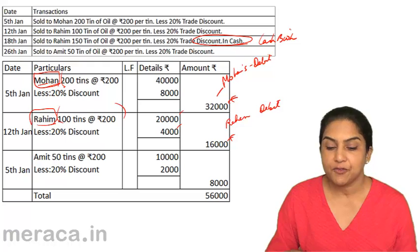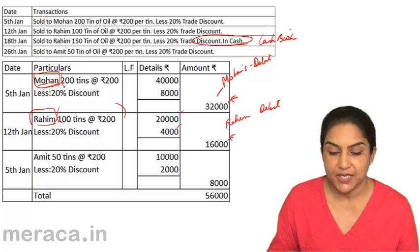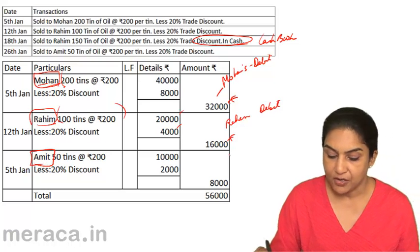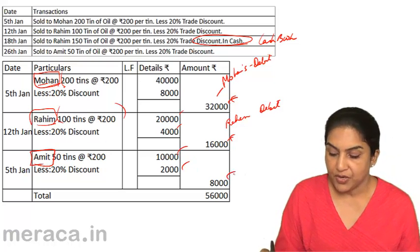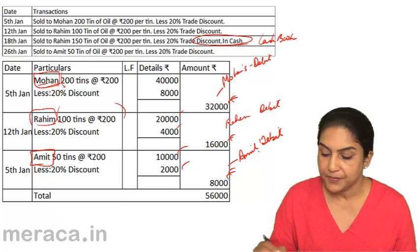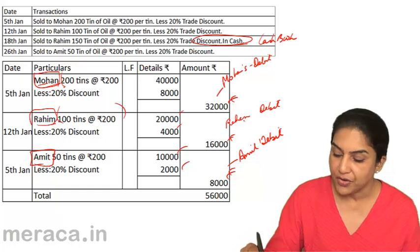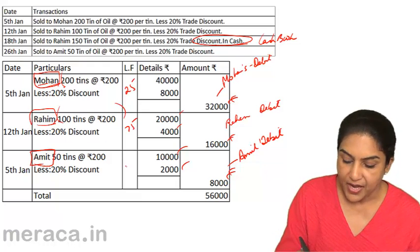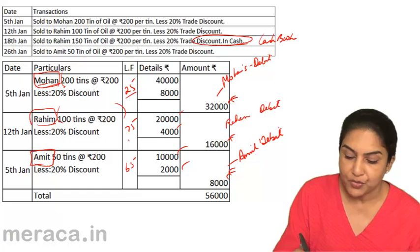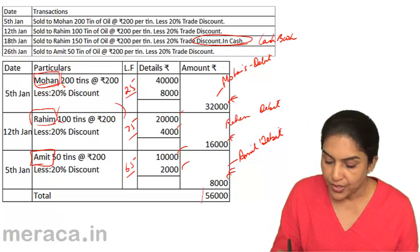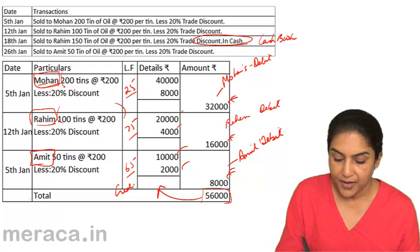Sold to Amit: 50 tins of oil at the rate of 200 per tin, less 20% discount — that gives 8,000. Amit is the customer, so Amit's account will be debited. Mohan's account ledger appears on page 25, Raheem's on page 75, and Amit's on page 65. These folio numbers are filled in when the posting is completed. The total of 56,000 would be posted to the credit of the sales account.